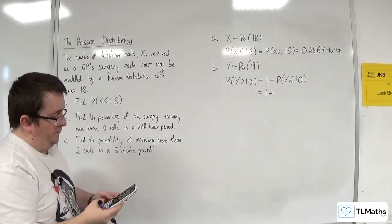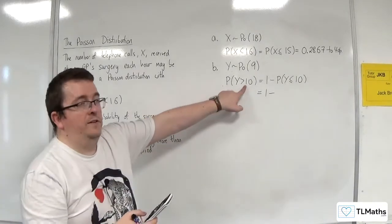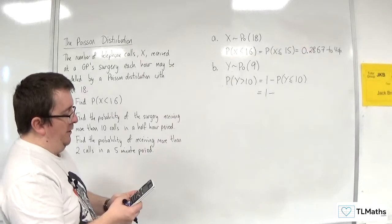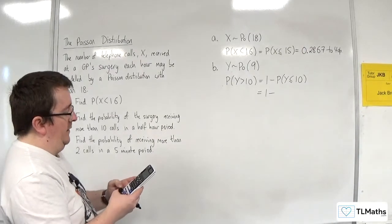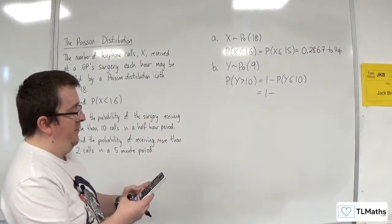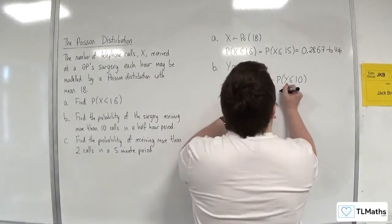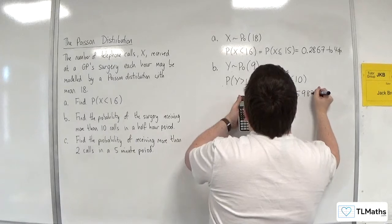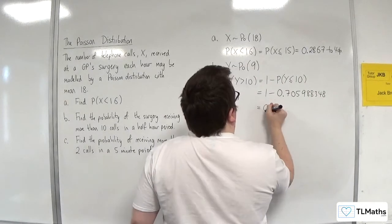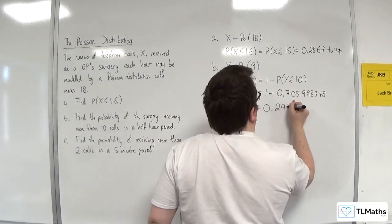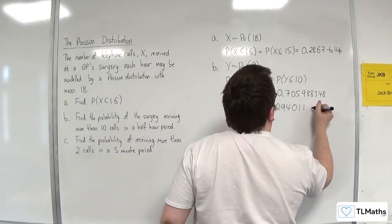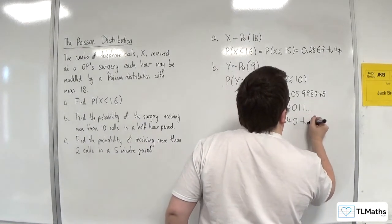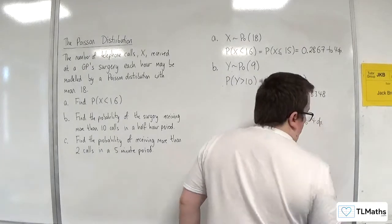OK, so you may have a calculator that can do that straight off, that's fine. The class is I can't, so I need X as 10 and lambda now as 9. So 0.705988348, so 0.294011, etc. So 0.2940 to four decimal places.